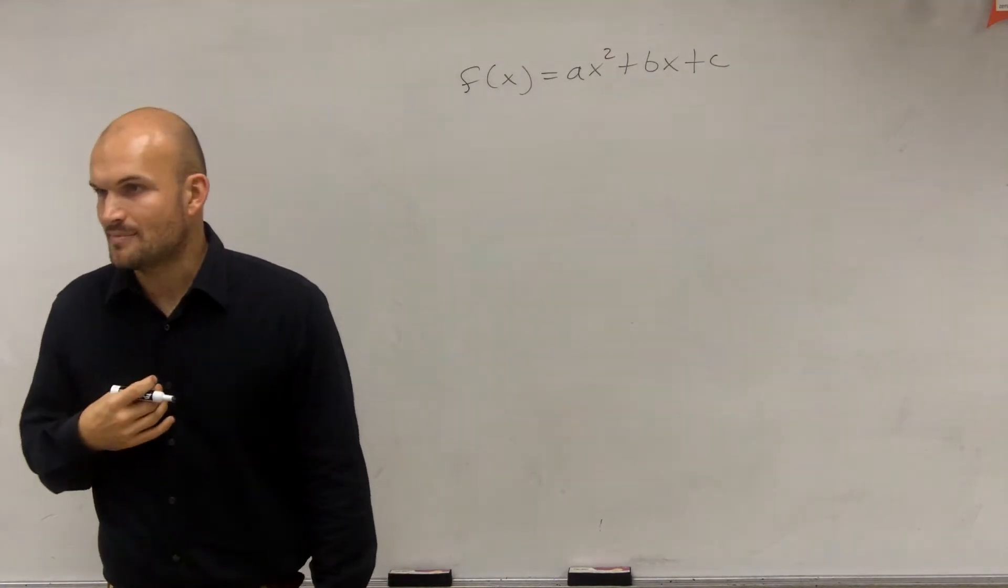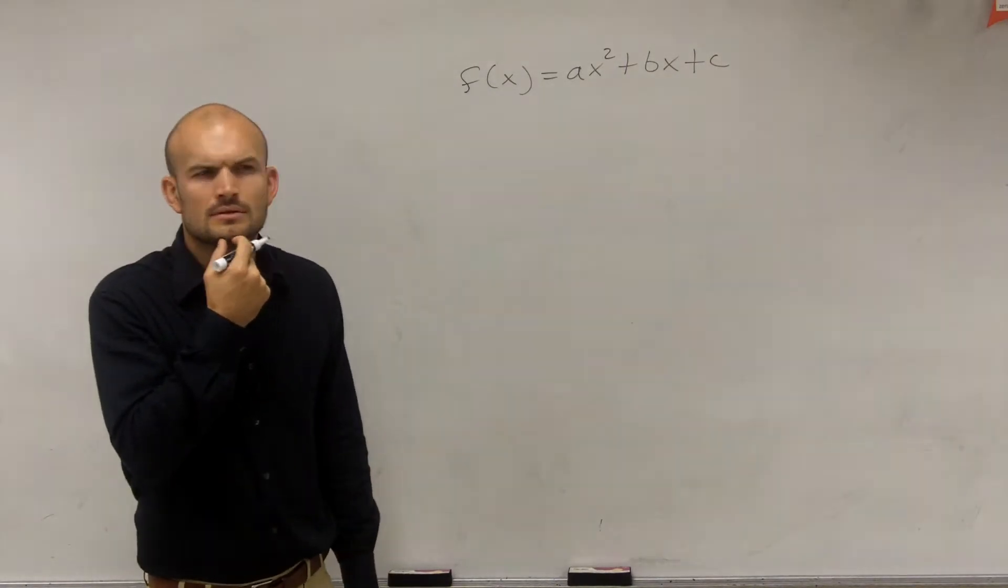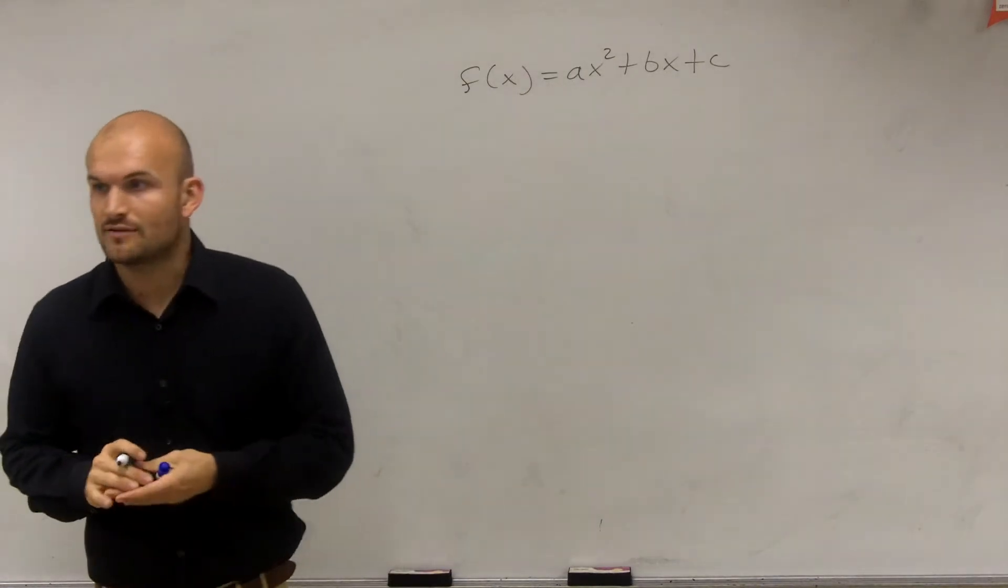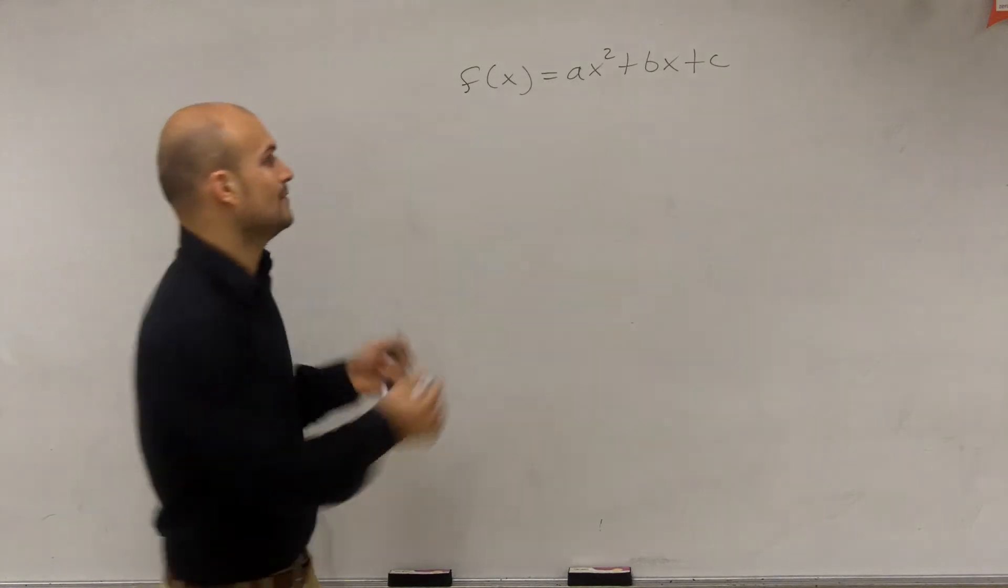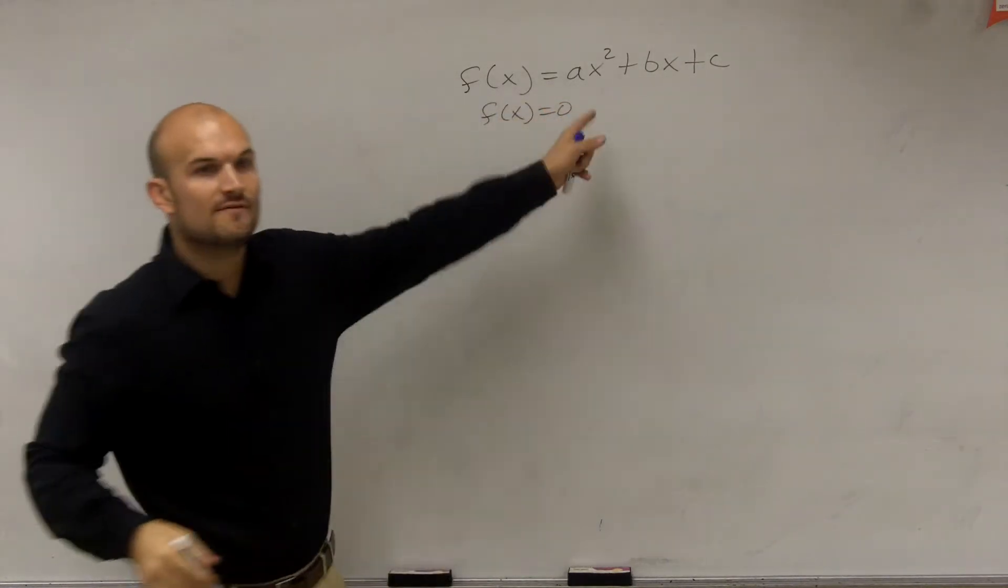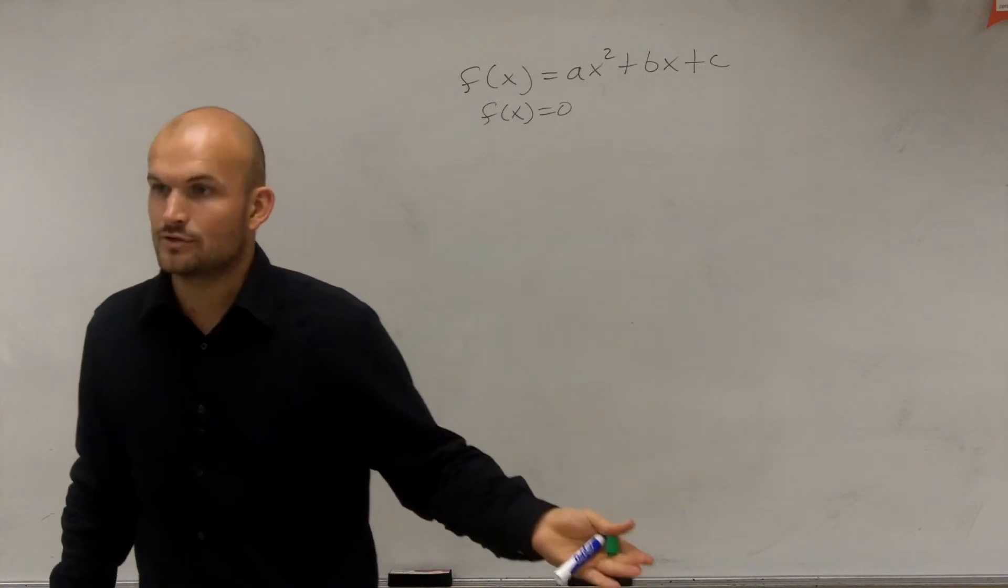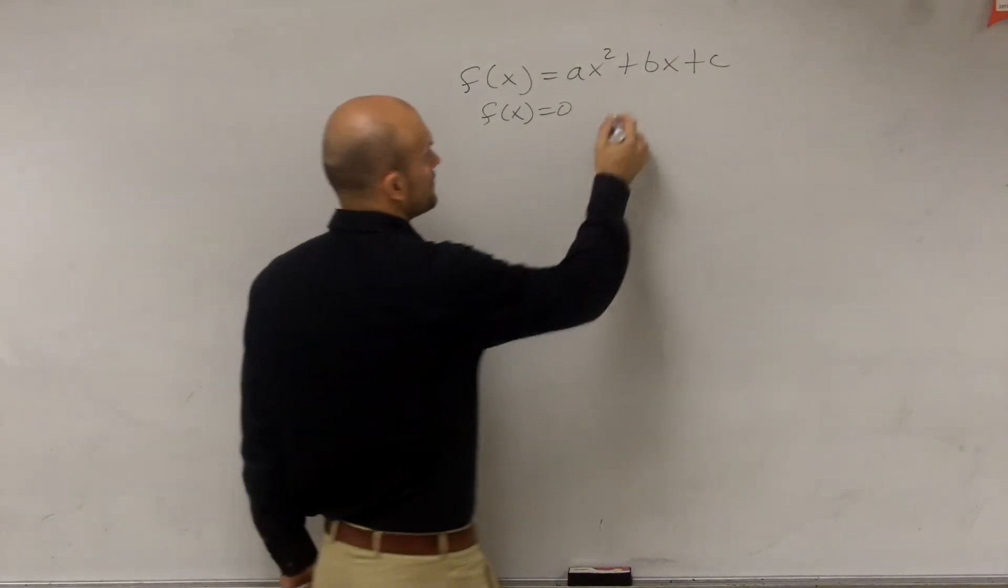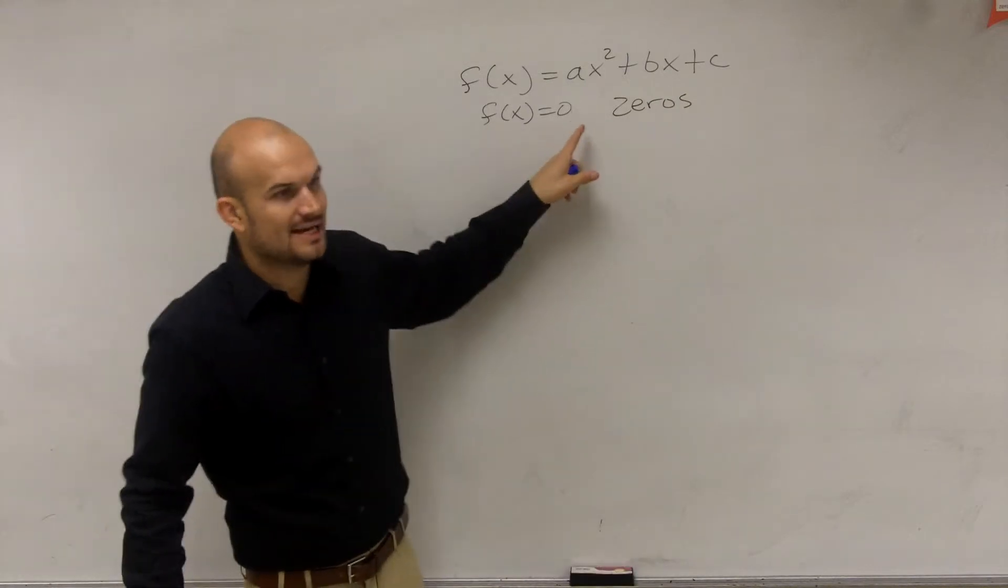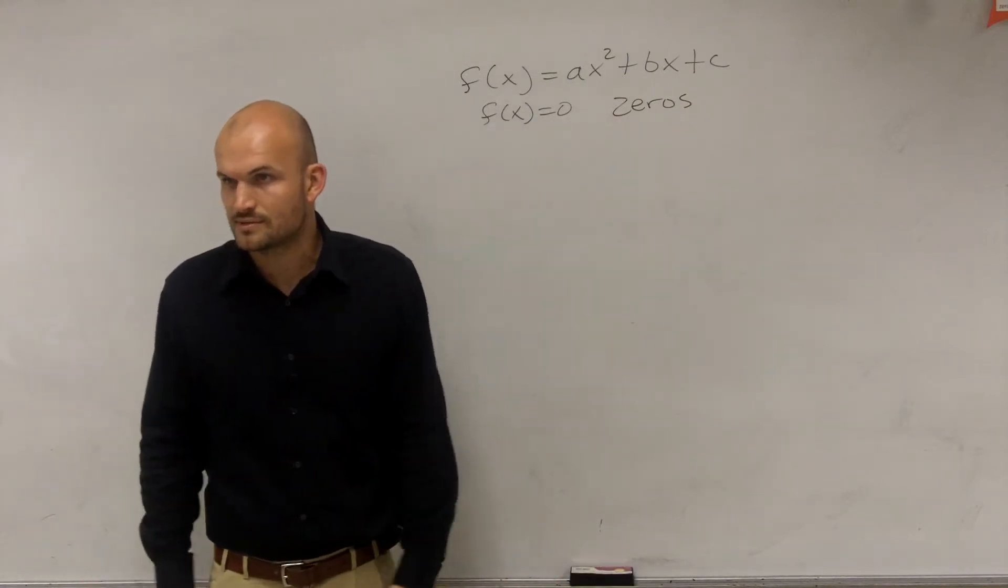Then what we talked about was the values that made your quadratic function equal to zero. When we said f(x), when that was equal to zero, the values of x that made that equal to zero were what we called the zeros. So the values of x that made that equal to zero is what we called our zeros.